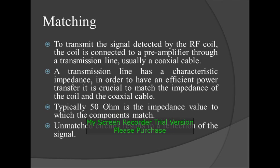Matching: to transmit the signal detected by the RF coil, the coil is connected to a pre-amplifier through a transmission line, usually a coaxial cable. A transmission line has a characteristic impedance. In order to have effective power transfer, it is crucial to match the impedance of the coil and the coaxial cable. Typically, 50 ohms of resistance is the impedance value to which the components are matched. Mismatched circuits result in a reflection of the signal.